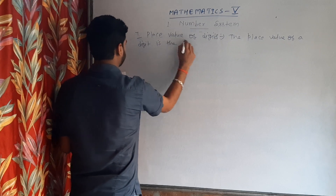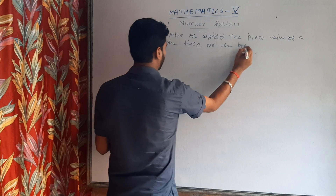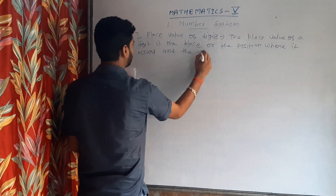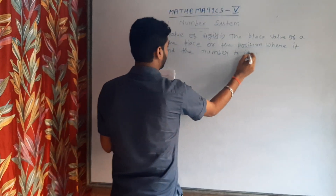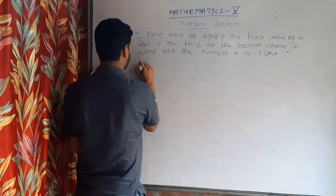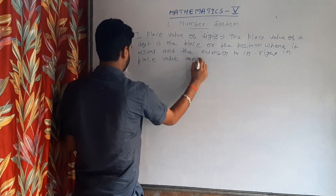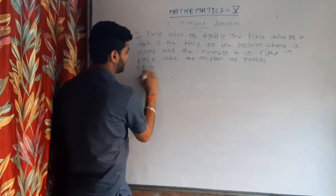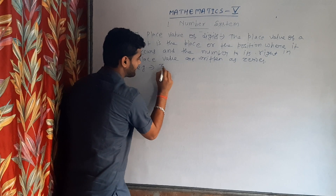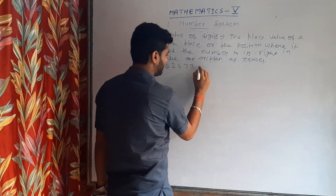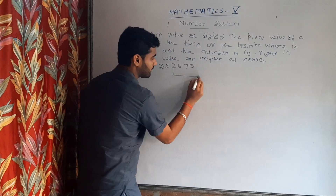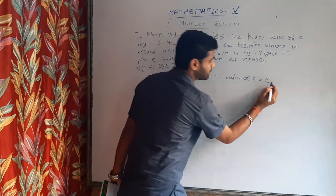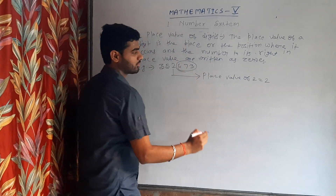Place value: the place or position where a digit occurs determines its place value, and the digits to its right in place value are written as zeros. As an example, if there is a number 35263 and you have to write the place value of 2, firstly we write 2 and there are 3 digits after 2, so we write 3 zeros — giving 2000.